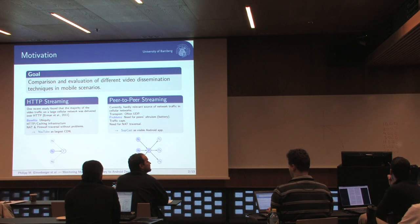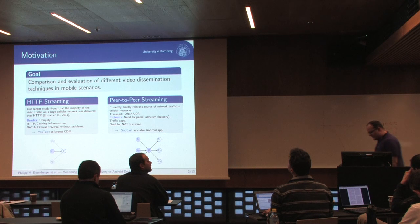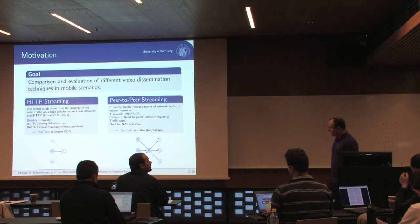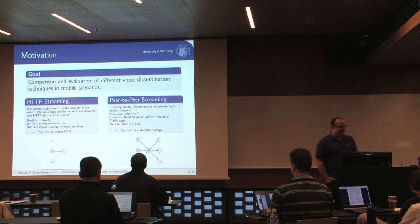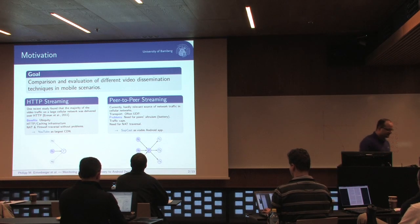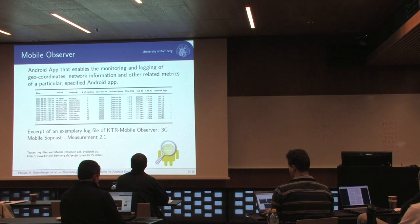One outcome of our study was that Subcast, which is quite popular in the wired internet, when operating in a 3G network, is not relaying any data, which makes definite sense due to the traffic caps.